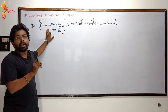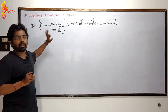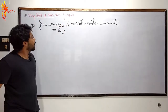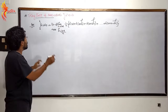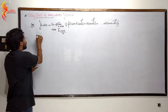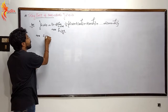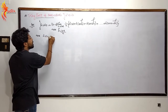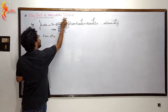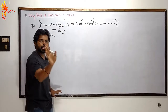Now let's look at the problem. For the integral from 0 to 5 of x squared plus 5 dx, f(x) is x squared plus 5.